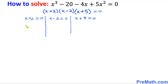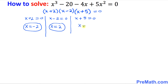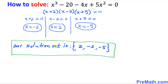If x plus 2 equals 0, then x equals negative 2 — that is one solution. From x minus 2 equals 0, x equals positive 2 — that is another solution. And from x plus 5 equals 0, x equals negative 5. So our solution set is {2, −2, −5}.